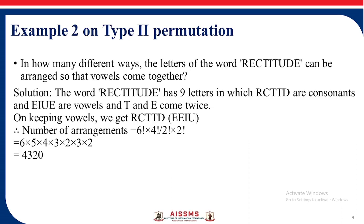Next example: In how many ways can the letters of the word RECTITUDE be arranged so that the vowels come together? RECTITUDE has 9 letters: consonants R, C, T, T, D and vowels E, I, U, E, where T and E each appear twice. Keeping vowels together: the number of arrangements is 6 factorial into 4 factorial upon (2 factorial into 2 factorial) = 4320.